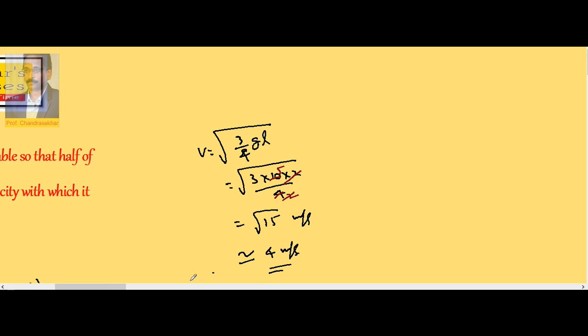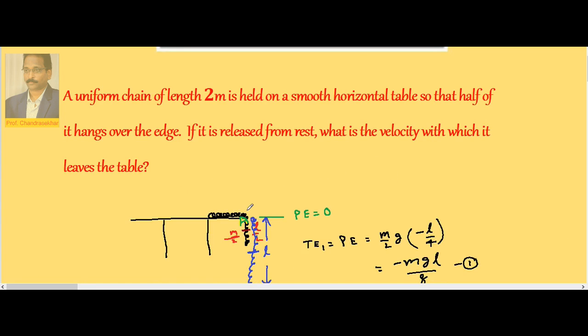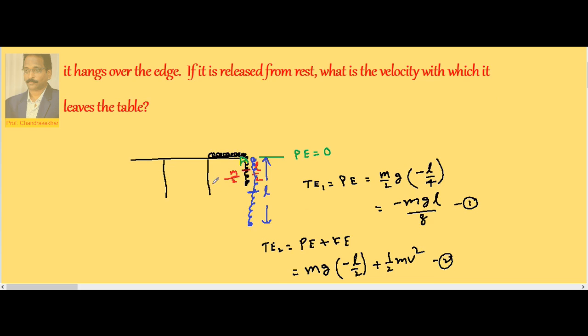Here chain is placed on the table, half of it is hanging freely. So always we need a reference point. I am not calculating from the ground because I don't know the ground, so let us take the table edge itself as the reference point. Here reference point is A.